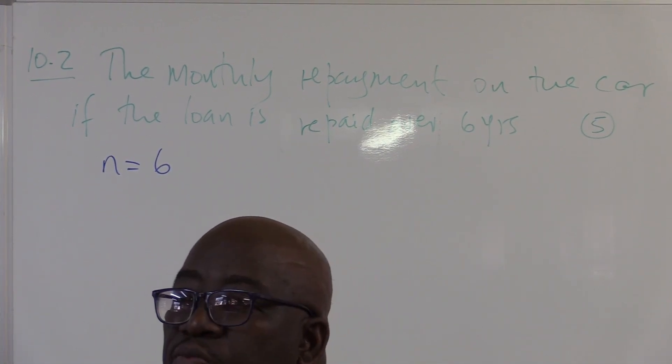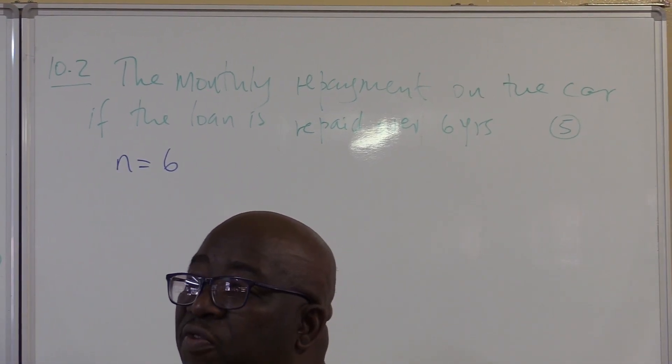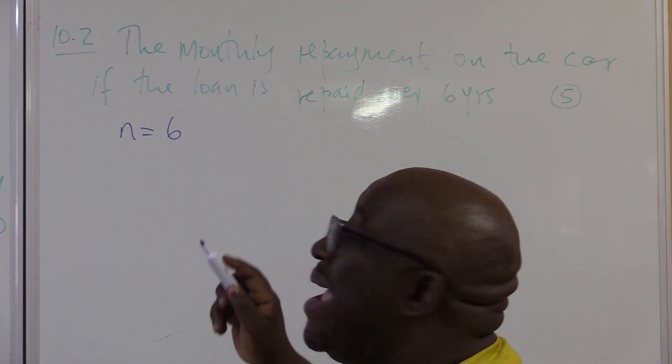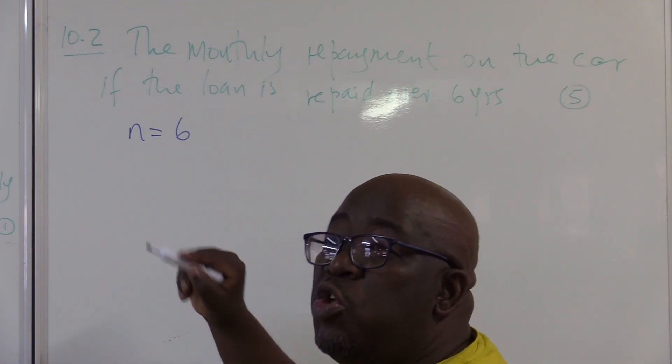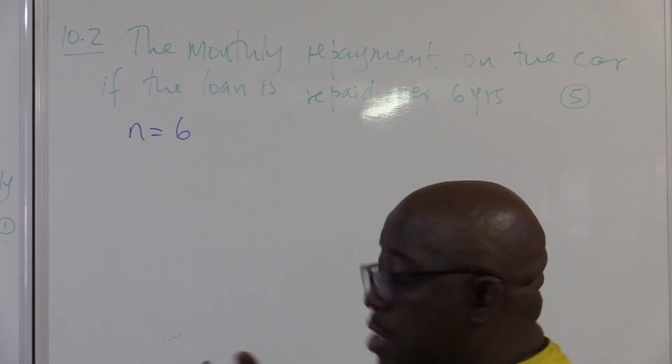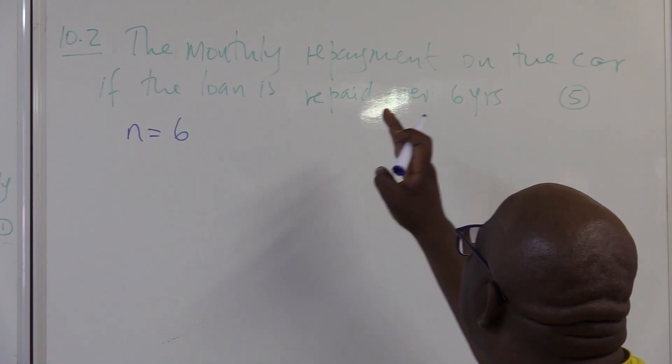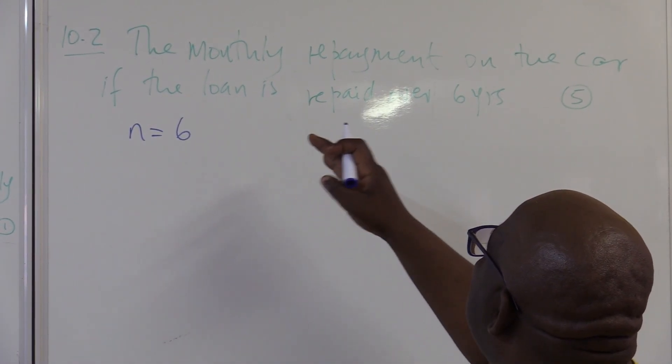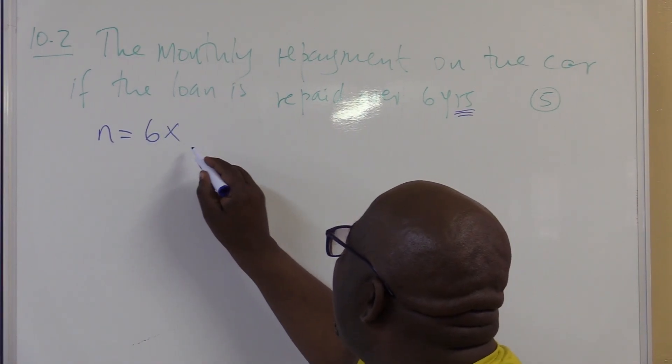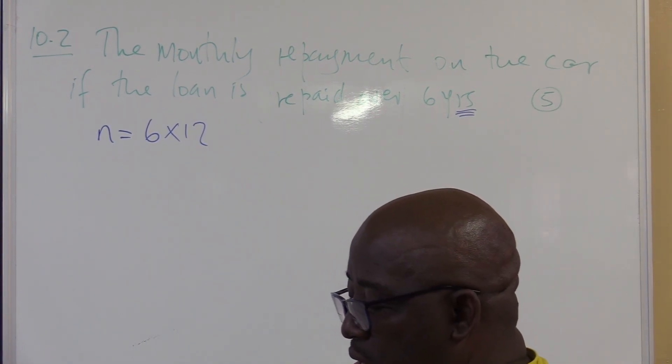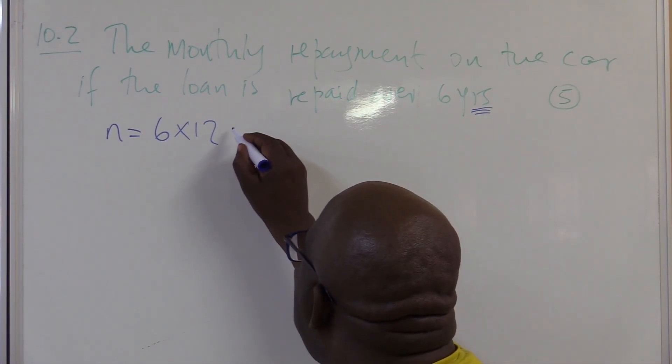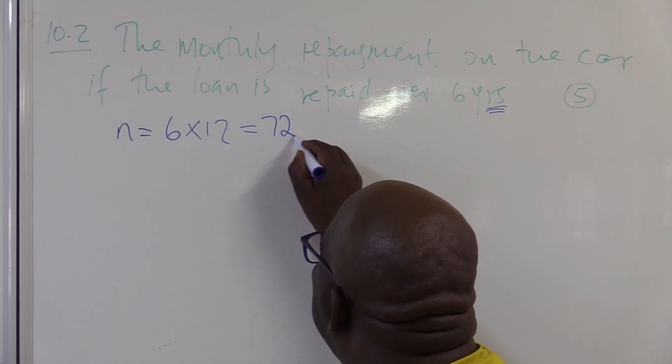Remember what we did to I. We divided by 12. When we divide I by 12, you must go and multiply N by 12. You only do that if it is in years. But if it is already in months, you don't have to. So, this one says the monthly repayment on the car if the loan is repaid over six years. So, it is still in years, not in months. So, I've got to multiply it by what? By 12. 6 times 12. 6 times 12. This is 72.